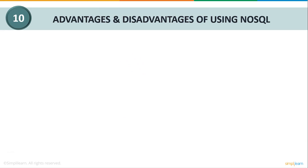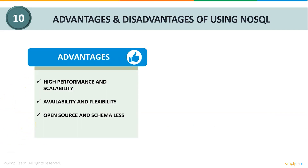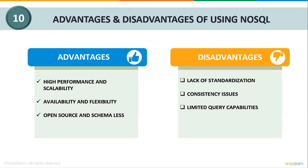Let us discuss some advantages and disadvantages of using NoSQL. Advantages include high performance, scalability, availability, flexibility, and it is open source and schema-less — you can download NoSQL databases directly from the internet. On the other hand, disadvantages include lack of standardization, meaning no fixed query language to retrieve data, which results in consistency issues and limited query capabilities.